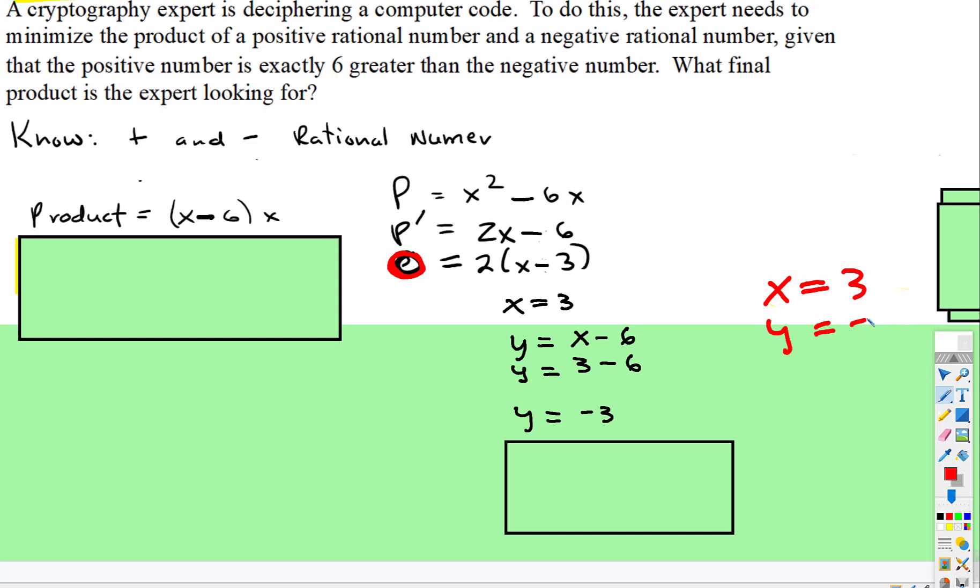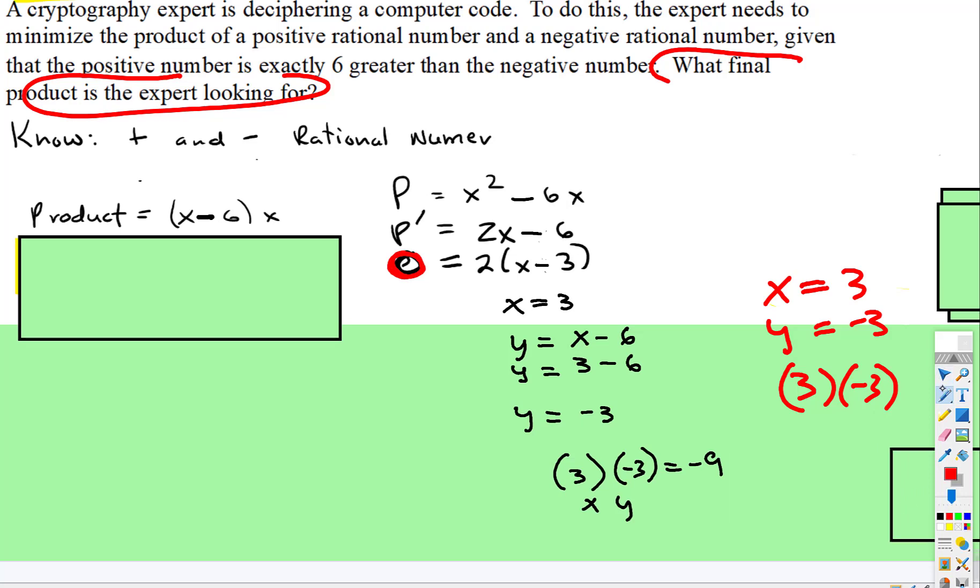But remember what the goal was: what will the final product be? So 3 times negative 3 is negative 9. And that's it, that's it for this one.